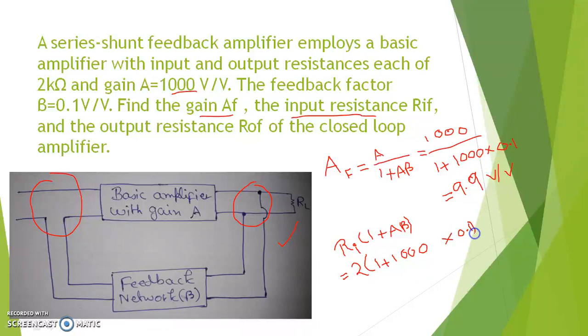And the unit is in kΩ because this is 2 kΩ. So, solve this by calculator. You will get the new input impedance with application of the feedback amplifier is basically 202 kΩ.